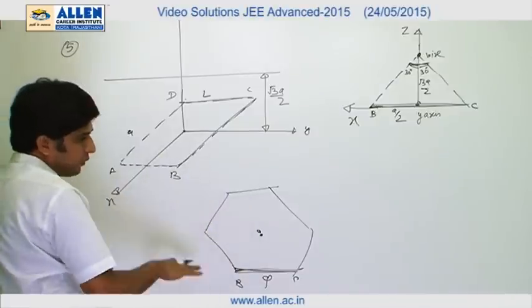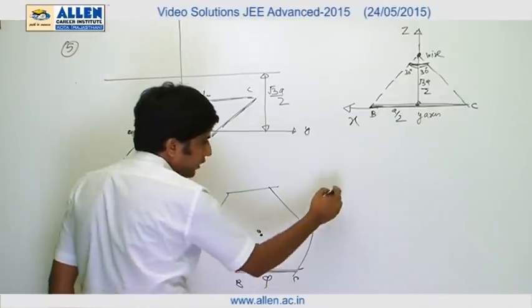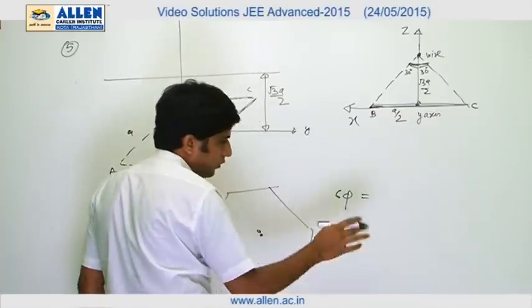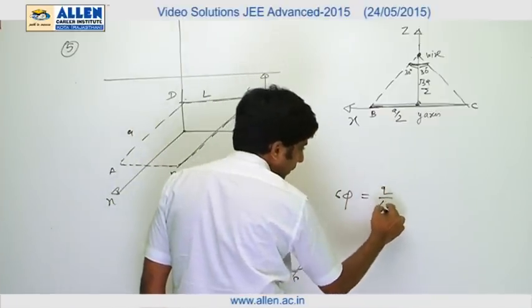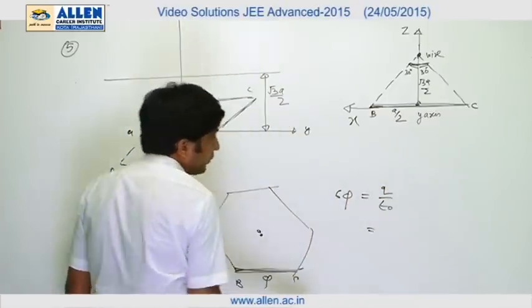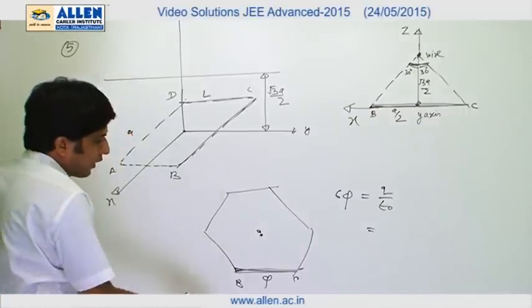And according to Gauss law, which will be equal to q by epsilon naught. Now value of q is the charge trapped by this hexagonal prism, which is lambda l upon epsilon naught.